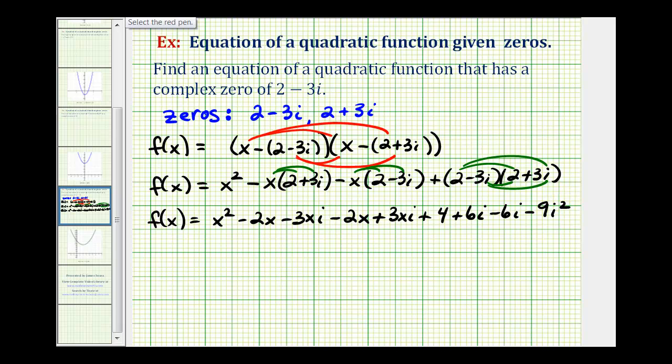Now we want to simplify this. Notice here we have -3xi + 3xi. These two have a sum of zero because they're opposites. And here we have +6i - 6i, which also gives us zero. We have f(x) = x². Combining like terms, -2x - 2x is -4x. And then we're left with 4 - 9i². But remember, i² = -1, so this ends up being +9.